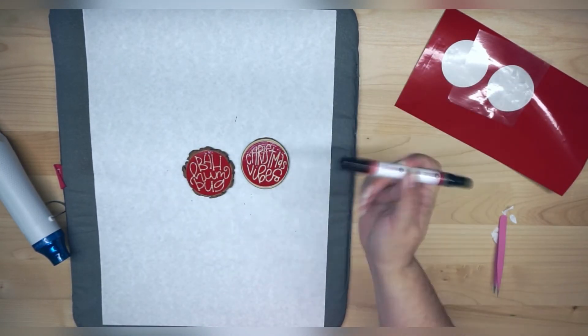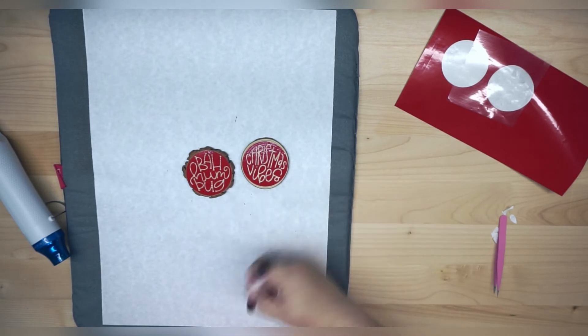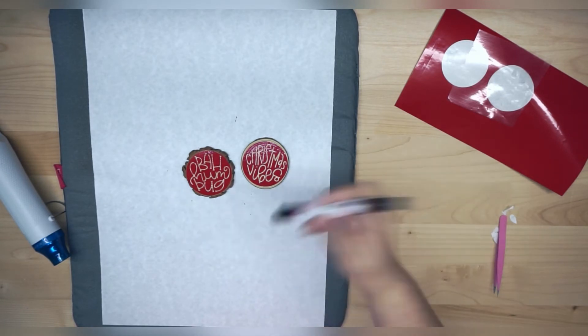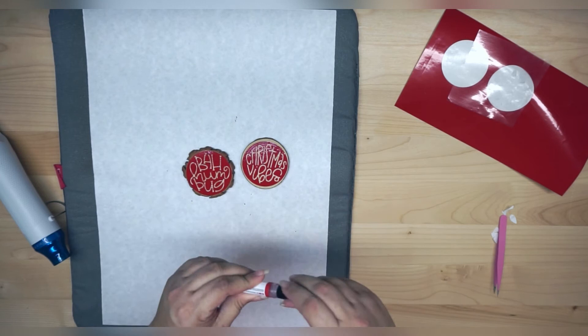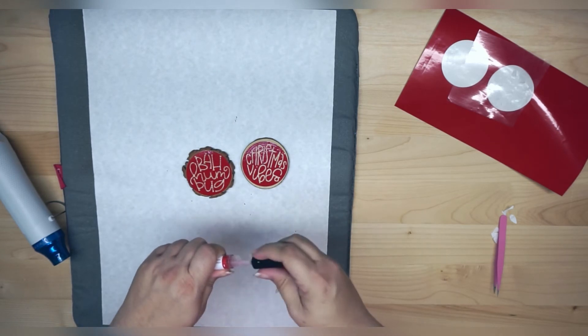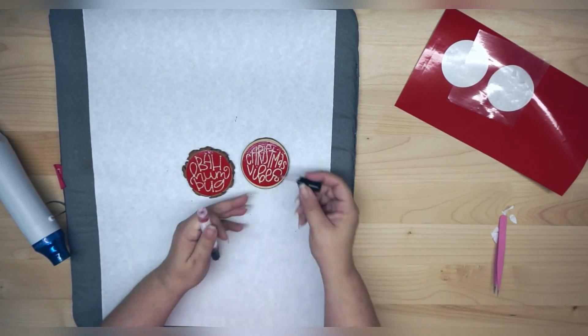So, I have my stencils down. This is where my marker is going to come in. I want to shake it really well. Now this marker, in particular, is one of the more common ones that you'll find. And you have two options. You have your tip, and then you also have a little brush.